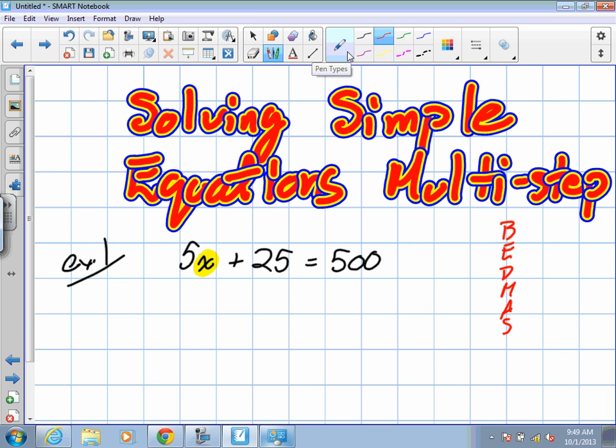The first thing we normally do in BEDMAS is deal with any brackets. Are there any brackets in this question? Any exponents? No. Any division or multiplication? Normally we deal with that first, so you would think to move that first. But it'll actually be easier if we always start at the bottom of BEDMAS when rearranging an equation.